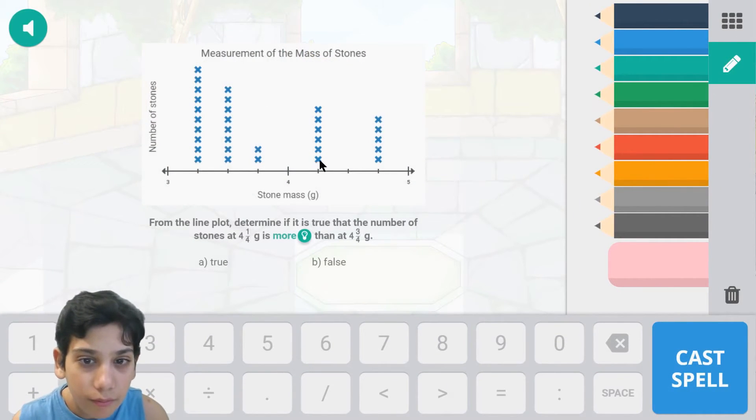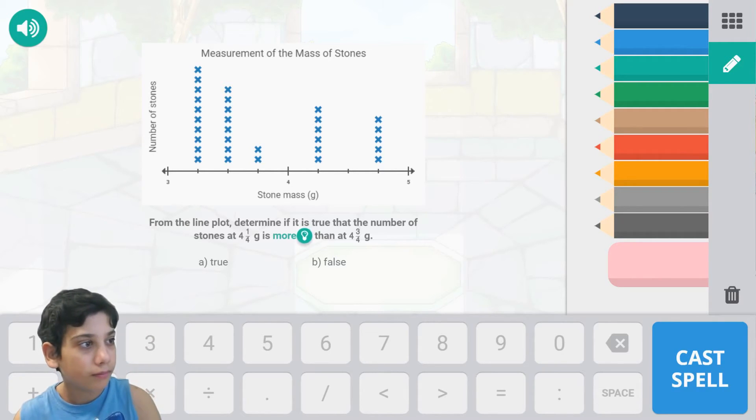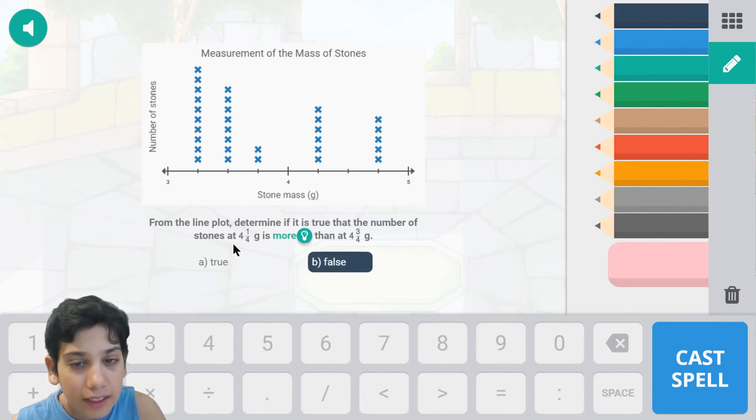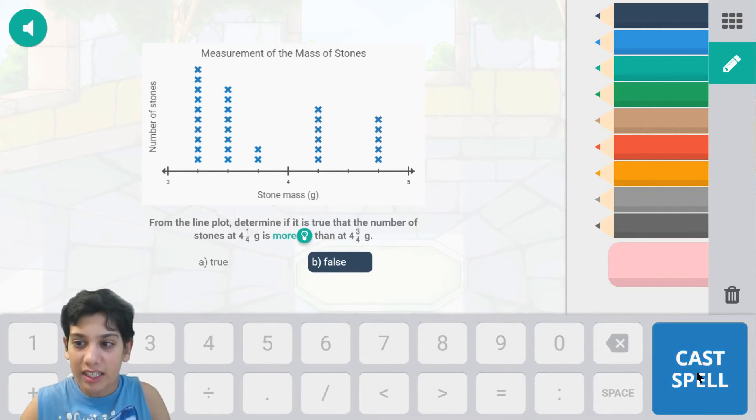Let's just determine if it is true that this is more than that. That is false because that is two fourths less than that. Cast spell.